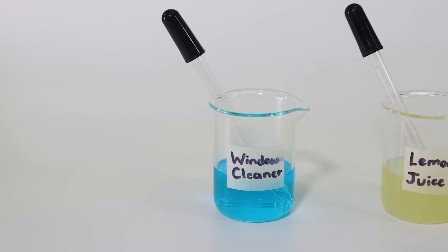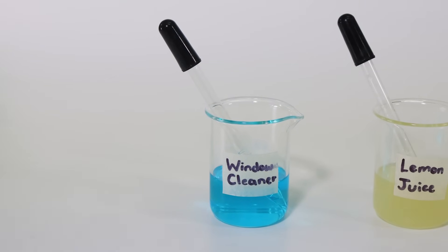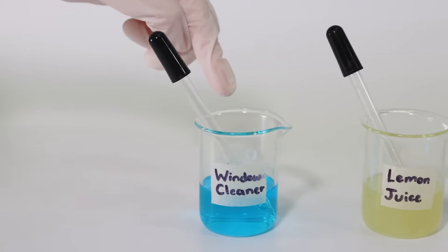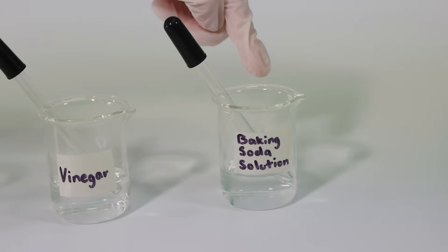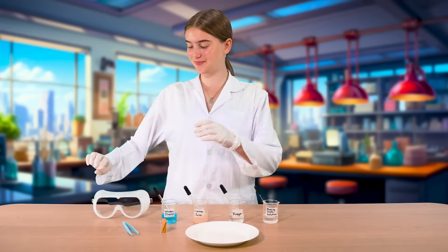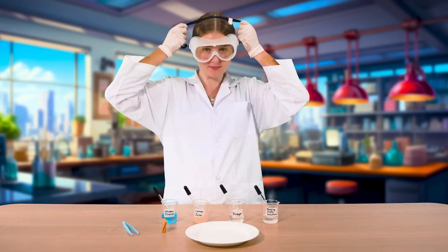We have four beakers, each containing a different substance: window cleaner, lemon juice, vinegar, and baking soda solution. We'll use eyedroppers to apply a small amount of each substance to a strip of litmus paper.